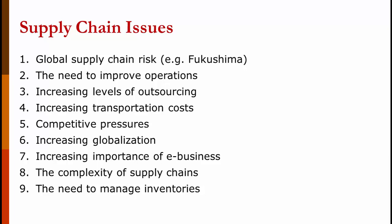Number five, more competitive pressures. Number six, and this is a big one, increasing globalization — not just us outsourcing to Japan, China, Mexico, and Canada, but also those companies coming in and competing with us here. Number seven, the increasing importance of e-commerce — Amazon and the like — which has really come to the forefront with COVID-19, and that trend will continue. Number eight, supply chains getting more complex due to outsourcing, and the need to manage inventories to keep prices and inventory holding costs down.